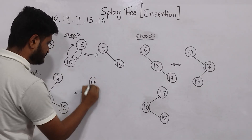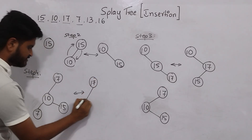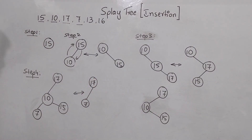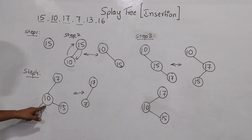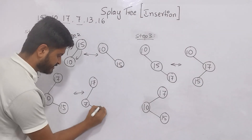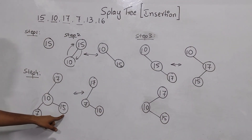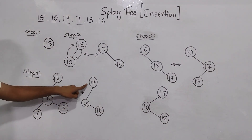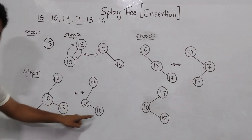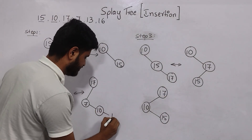17 stays the same. 7 is exchanged with 10. Now I compare 10 and 15: 10 is greater than 7 so it goes to the right side of 7. Next, 15 is less than 17, greater than 7, and greater than 10, so it also goes to the right side.